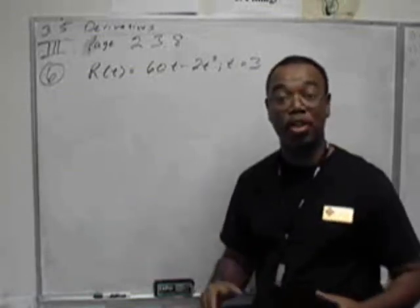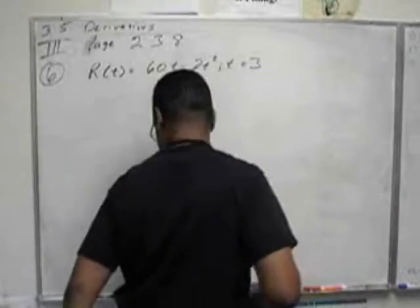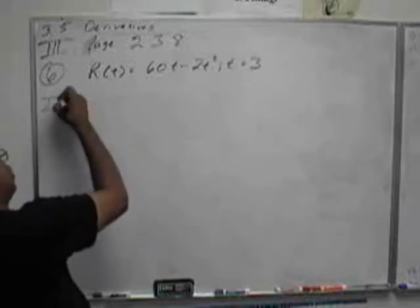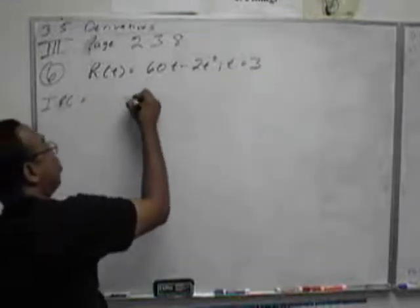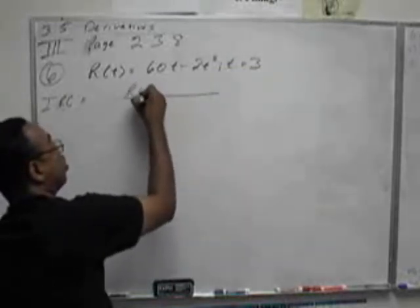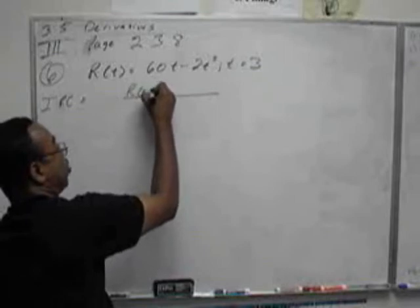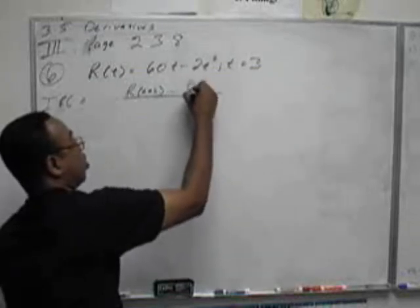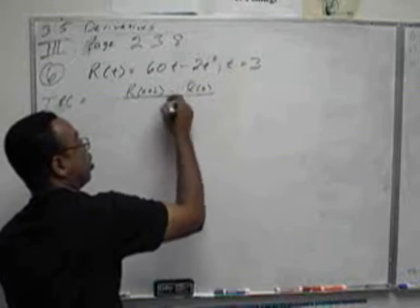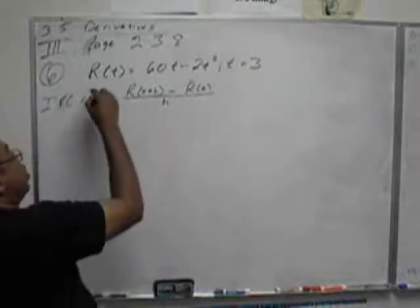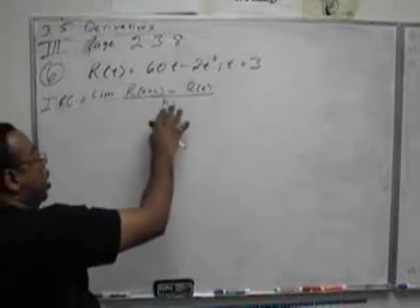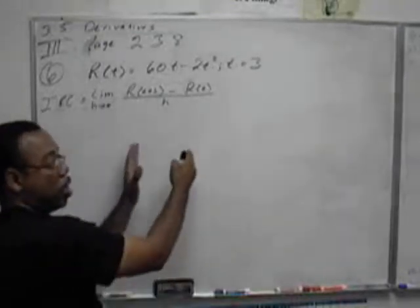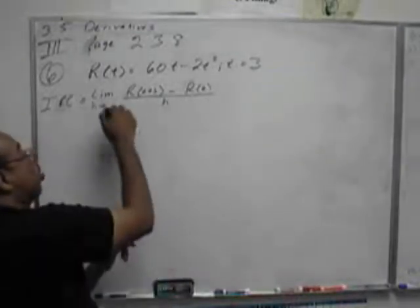So you will need your graphing calculators for this one. Instantaneous rate of change will involve finding the average rate of change. This will be r of a plus h minus r of a all over h. And this will be one average rate of change, but the limit as h goes to zero, we'll start looking at different average rates of change as we put in smaller and smaller h's.